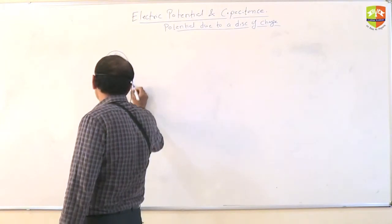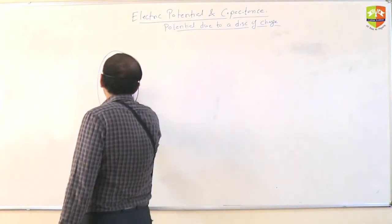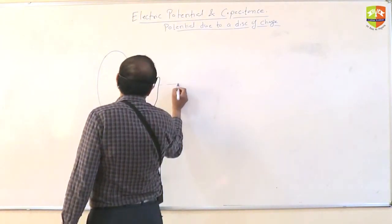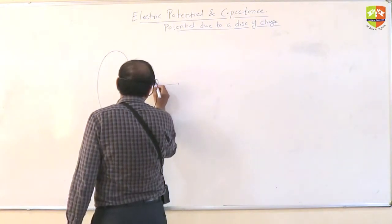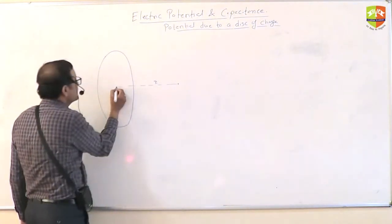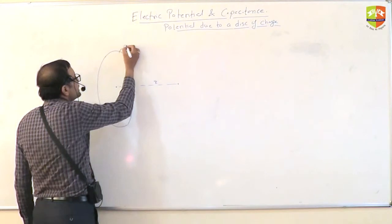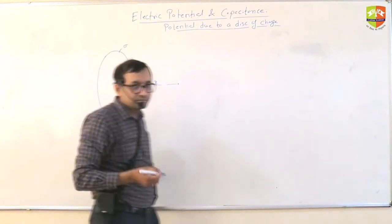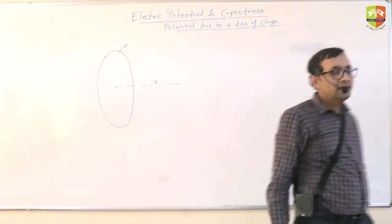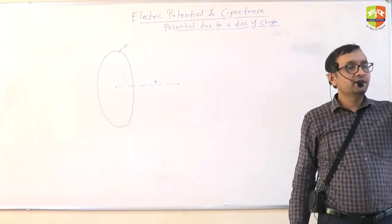Suppose this is a test. You need to find out potential at a distance Z along the axis. Charged per unit area is given as sigma.